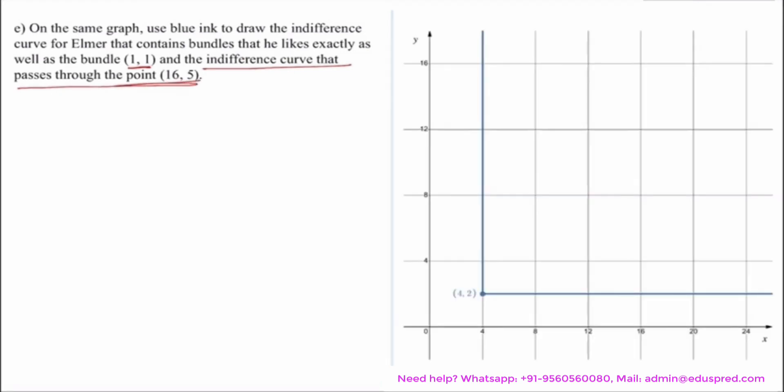We drew this graph in my previous video, where on the x-axis we have good x, y-axis we have good y and this was the indifference curve passing through the point (4,2). Now, the question asks us to draw the indifference curve here. The first one passes through the point (1,1).